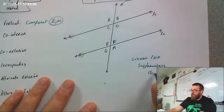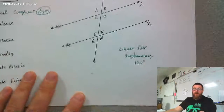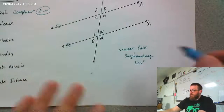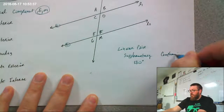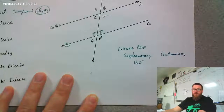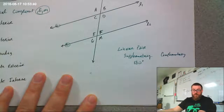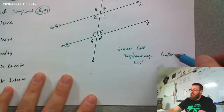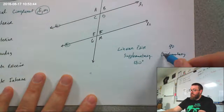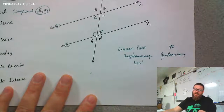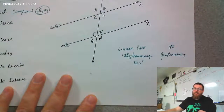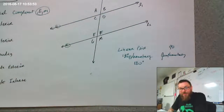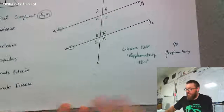Supplementary angles add up to 180 degrees. People mix up supplementary with complementary all the time. A quick way to remember: supplementary adds up to 180 and complementary adds up to 90 — you can visualize the C in complementary as a 90 and supplementary as a 180. Hopefully that helps you remember.